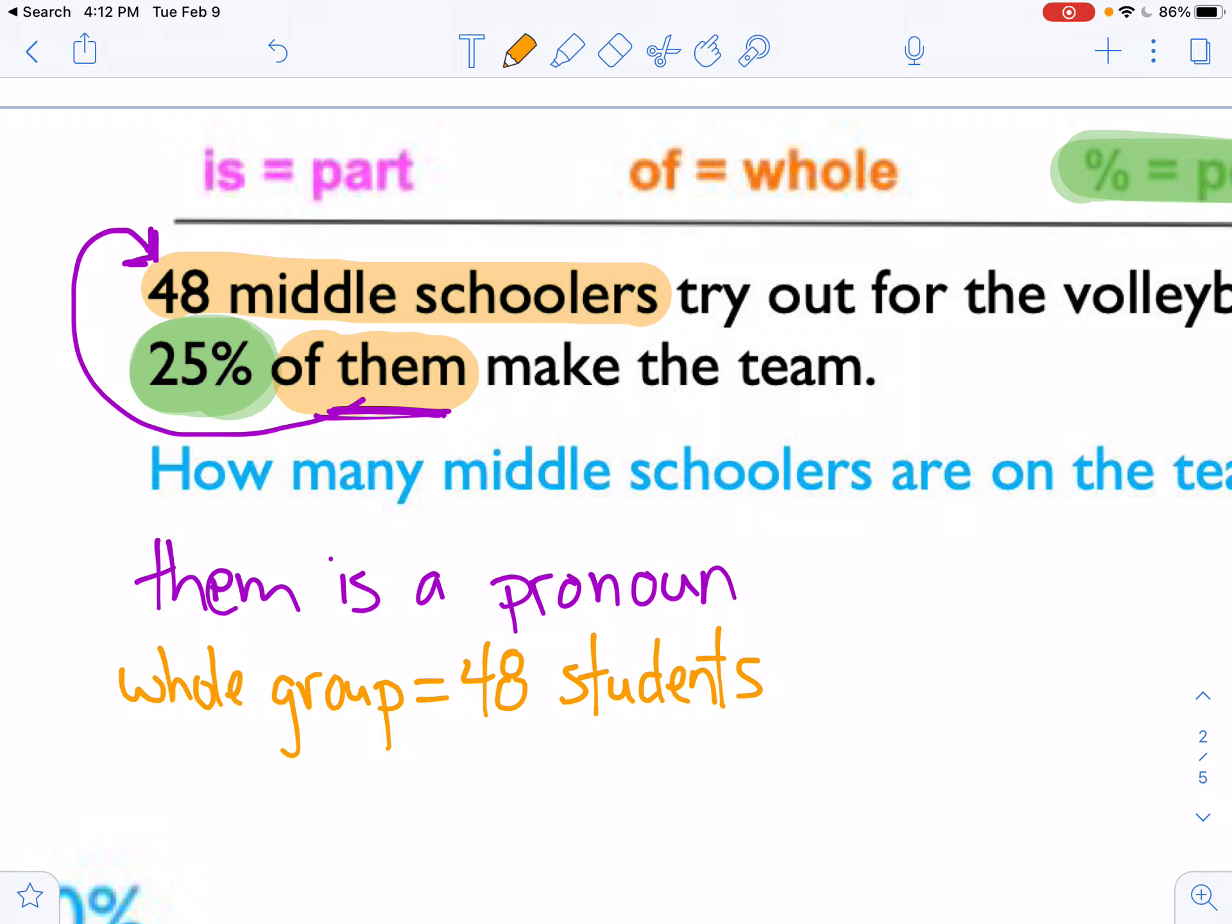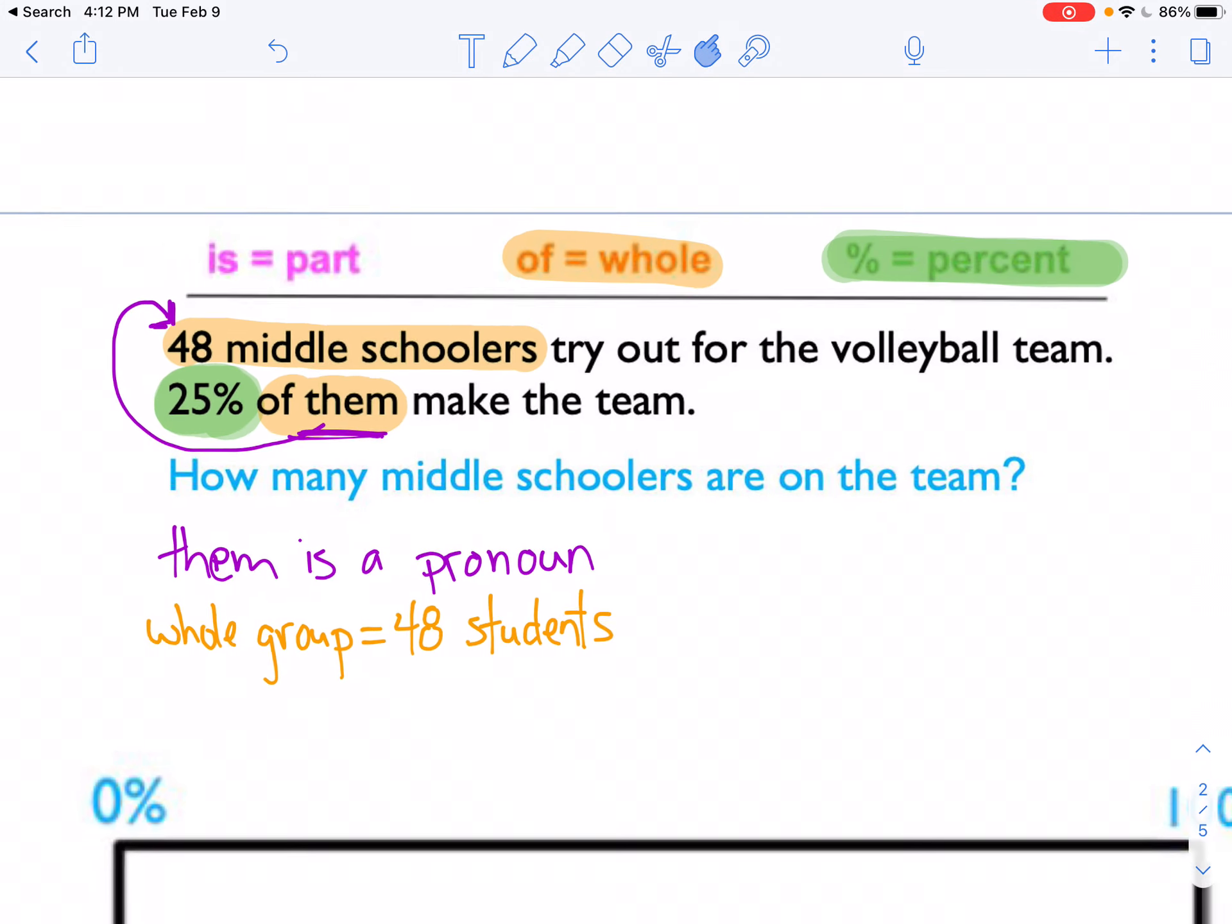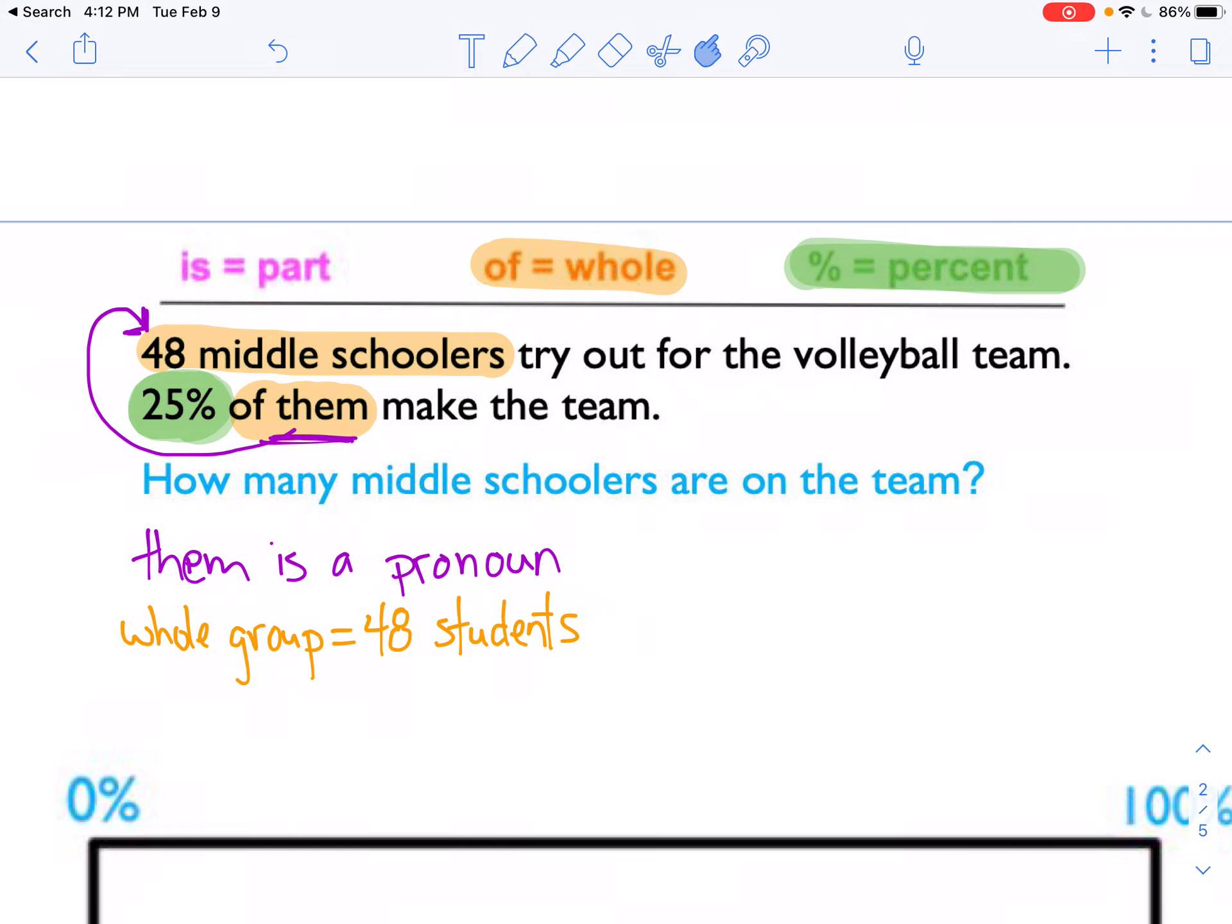That's the whole group that tried out. Not everybody who tried out made the team. 25% of them did. So you can see that we have our green, we have our percent, we have our orange, we have our whole. So we are going to be solving for the part of the group that made the team.